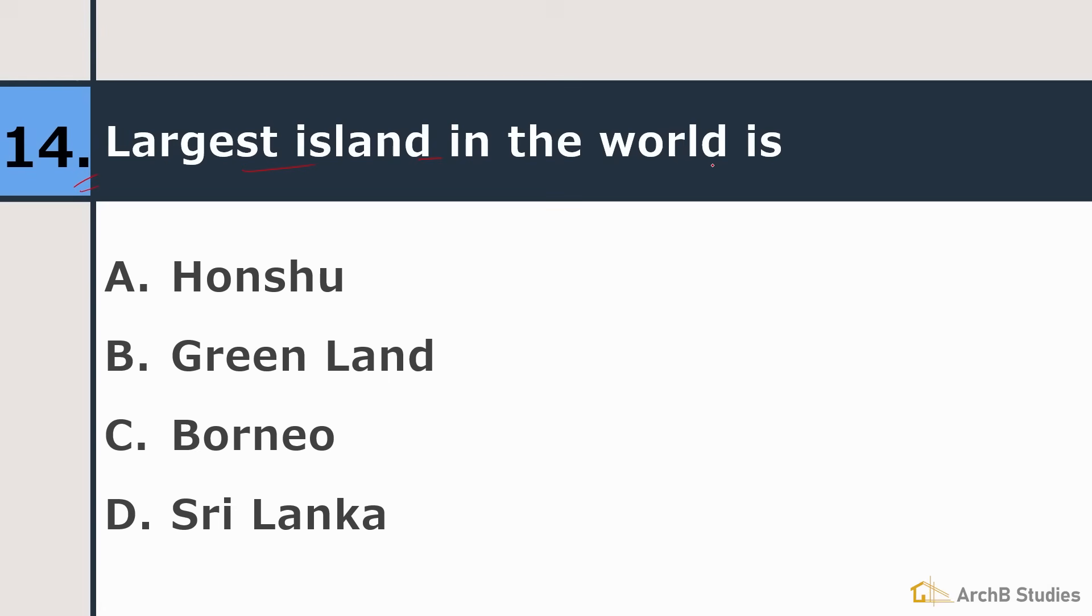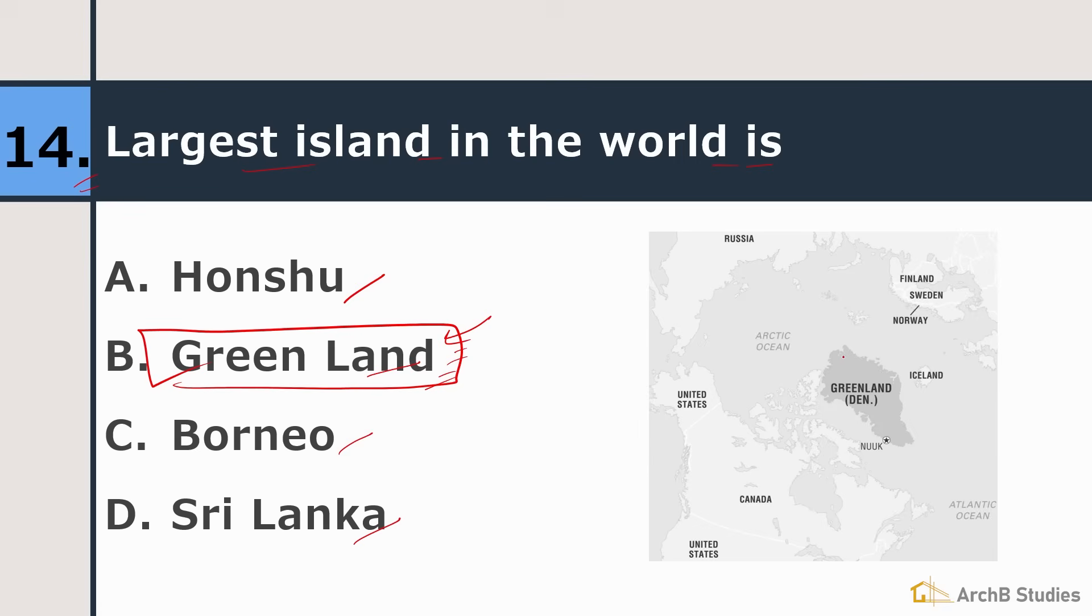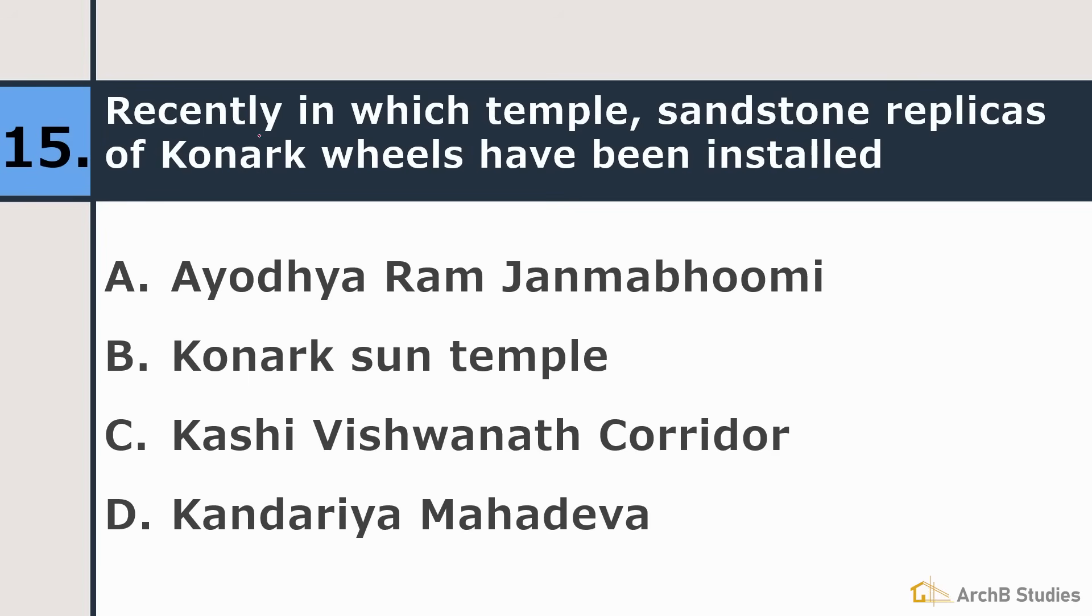Fourteenth is largest island in the world is Honshu, Greenland, Borneo or Sri Lanka. Right answer is Greenland. In some places you might find that the answer of this question is New Guinea. But area wise this is larger. So this is the right answer. Here you will find just above the Canada. Fifteenth is recently in which temple sandstone replicas of Konark wheels have been installed. Ayodhya Ram Janmabhoomi, Konark Sun Temple, Kashi Vishwanath Corridor or Kandariya Mahadeva. Right answer is Kashi Vishwanath Corridor.